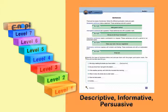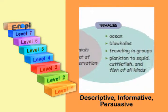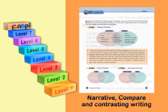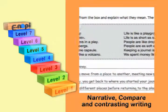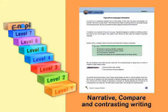In level 7, students write multi-paragraph essays using complex sentences. At this stage, they are able to handle many forms of writing, including descriptive, informative, persuasive, narrative, compare and contrast, and argumentative writing.